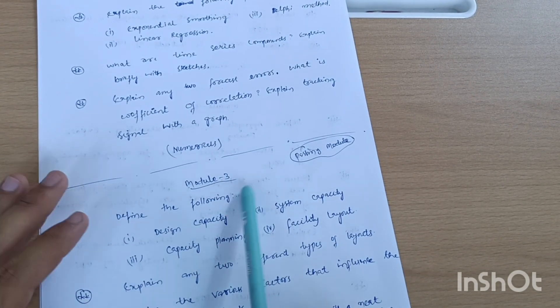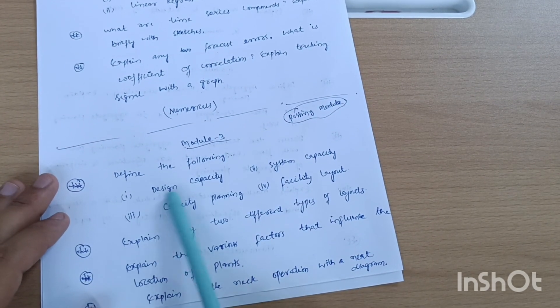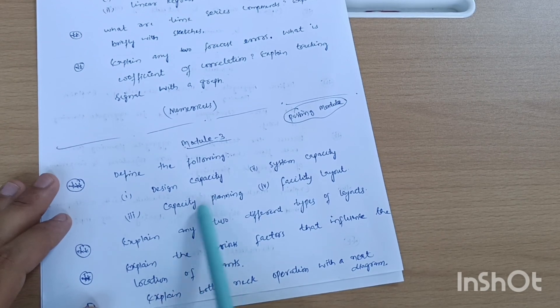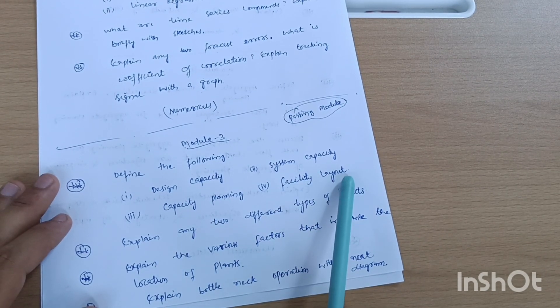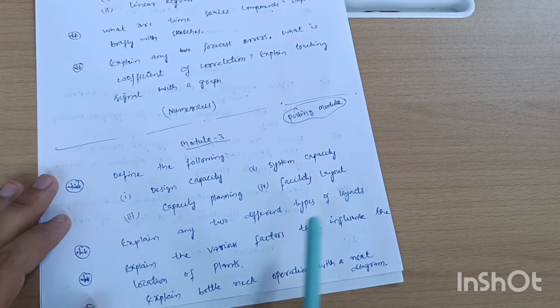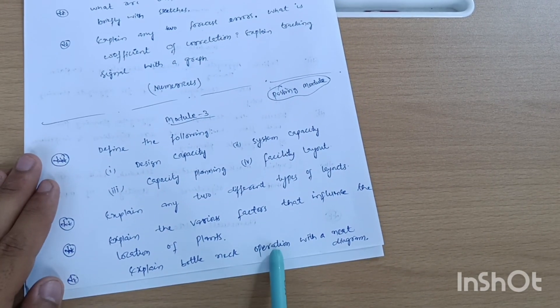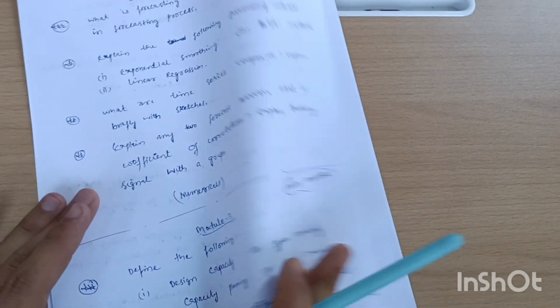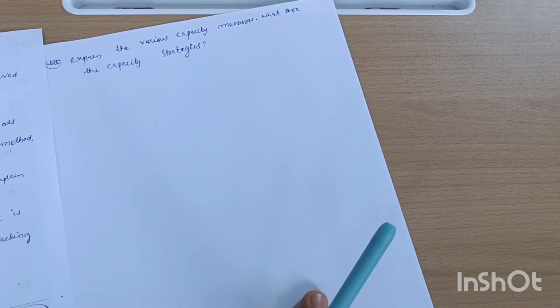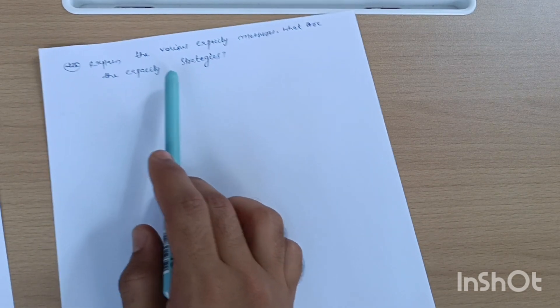Next is Module 3, which is a passing module. Define the following: design capacity, system capacity, capacity planning, facility layout, and explain any two different types of layouts. Explain the various factors that influence the location of plants. Explain bottleneck operation with a neat diagram. Last but not least, explain the various capacity measures and capacity strategies.